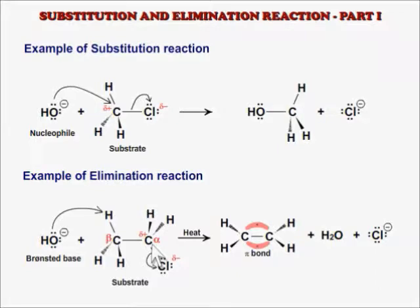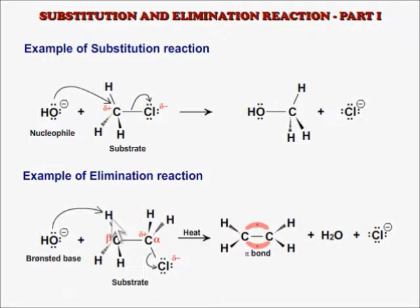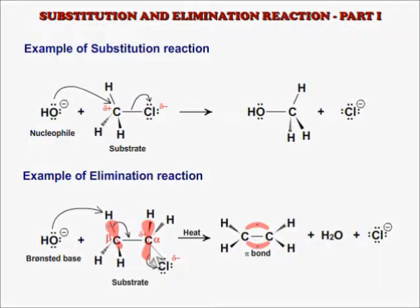In the first case, the leaving group is substituted by the nucleophile and the reaction is a substitution reaction. In the second case, the reagent acts as a base and reacts with the hydrogen of the beta carbon. The electron pair of the C-H bond of the beta carbon then interacts with the empty orbital of the alpha carbon, created due to cleavage of the carbon-halogen bond, to form a pi bond between the alpha and beta carbon.